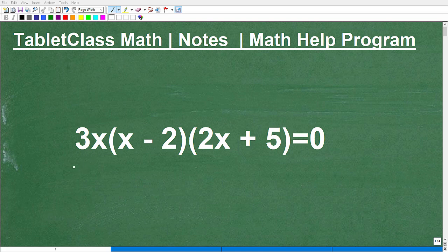Okay, let's talk about solving this polynomial equation. The equation is 3x times x minus 2 times 2x plus 5 is equal to 0.